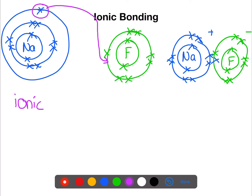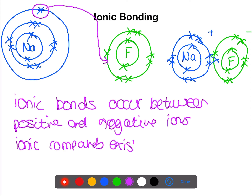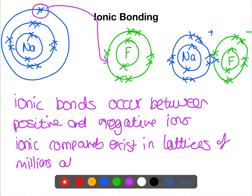Ionic bonds occur between all of the positive and negative ions. It's not restricted to the atom which lost the electron and the atom which gained the electron. Ionic compounds exist in lattices of millions of alternating ions. All of the positive ions are surrounded by negative ions and all of the negative ions are surrounded by positive ions. The ionic bonds are the electrostatic attractions which hold them together.